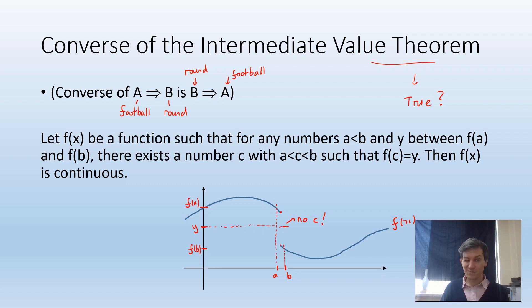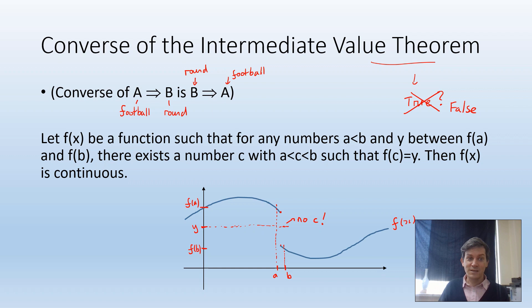So from that logic it looks like the converse might be true, but actually it turns out the converse is not true — the converse of this theorem is false. What that means is you can find functions with the property that between a and b you can always find c such that f(c) = y, but which are not continuous. What John Conway did was construct such a function.